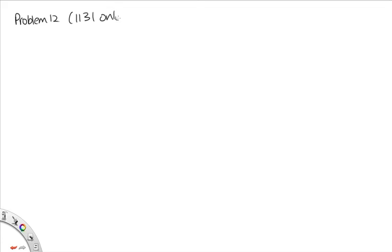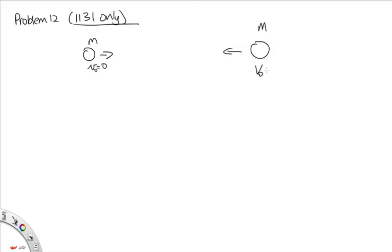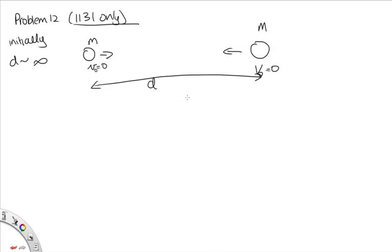Problem 12 for 1131 only. We have two masses, little m and big M, initially at rest and a large distance apart. Their initial momentum is zero and their initial kinetic and potential energies are both zero (since the distance is approximately infinity). We use both conservation of momentum and conservation of mechanical energy to find the relative speed of approach when their separation is d.